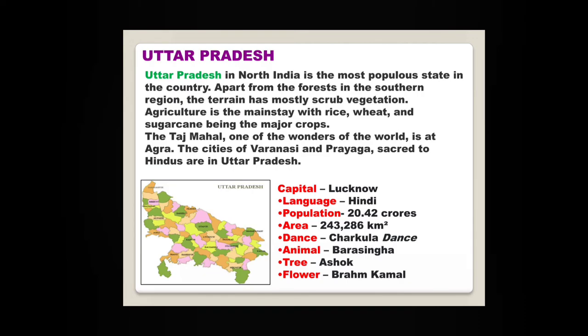Uttar Pradesh, in north India, is the most populous state in the country. Apart from forests in the southern region, the terrain has mostly shrub vegetation. Agriculture is the mainstay, with rice, wheat and sugarcane being the major crops. The Taj Mahal, one of the wonders of the world, is at Agra. The cities of Varanasi and Prayag, sacred to Hindus, are in Uttar Pradesh. The capital is Lucknow.